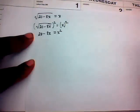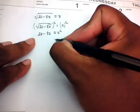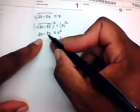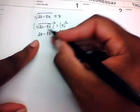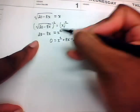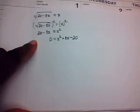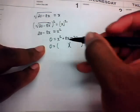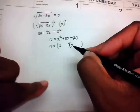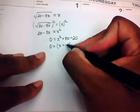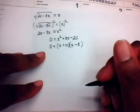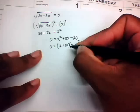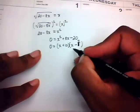We need zero on one side. Moving 20 and −8x to the right: 0 = x² + 8x − 20. This trinomial factors into (x + 10)(x − 2) = 0, giving proposed solutions x = −10 or x = 2.